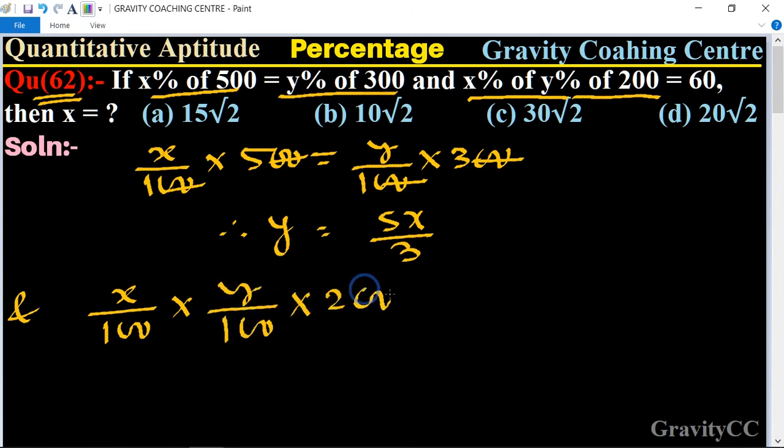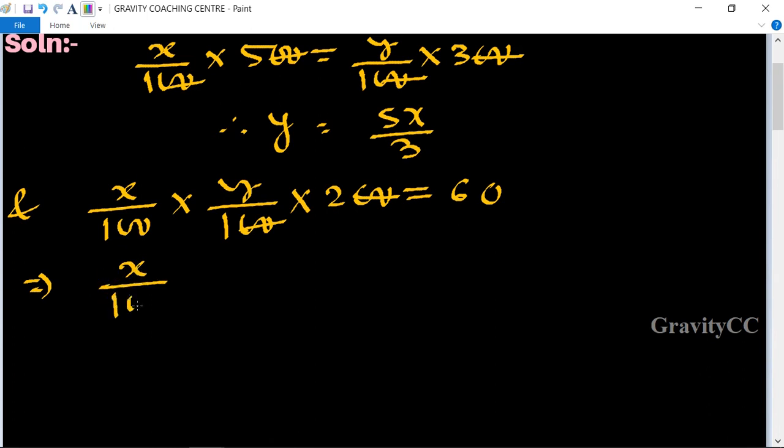...× 200 = 60. Canceling zeros, we have x/100 × (5x/3) × 2 = 60. Simplifying, we cancel to get x²/10 × 2 = 60.